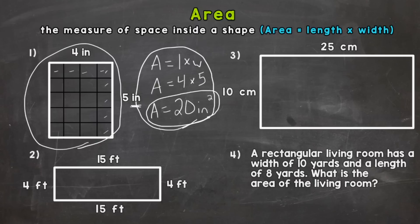Let's take a look at number two. So we write out our formula first. Area equals length times width. Next we plug in.